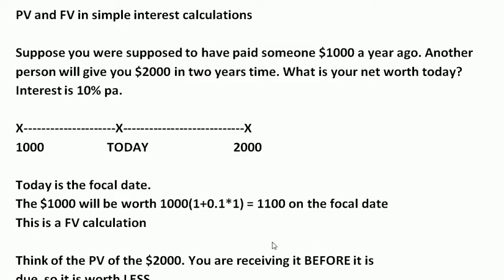So here is the scheme — always do a little drawing like this. Here is today. We've set the focal date as today because the question asks for net worth today, but it could be any point along this line or even either side of it. I've just set the focal date as today, and everything goes from the focal date.